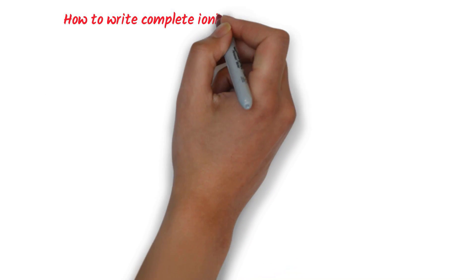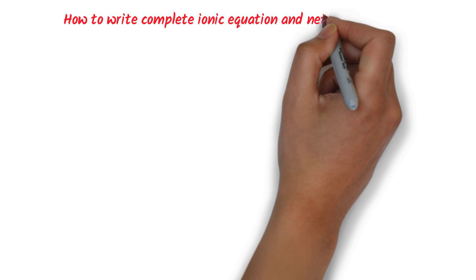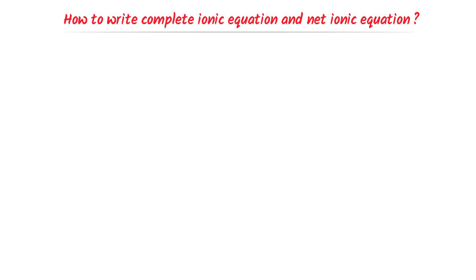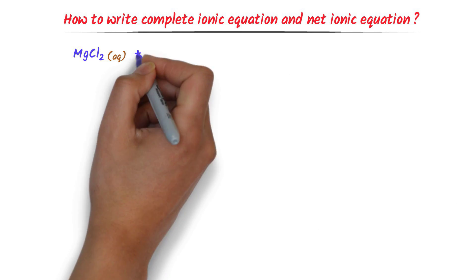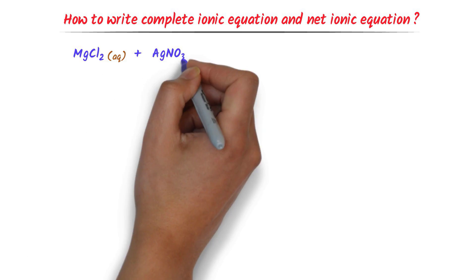How to write a complete ionic equation and net ionic equation? Consider this reaction: magnesium chloride reacts with silver nitrate.